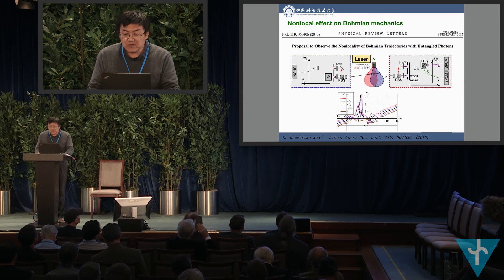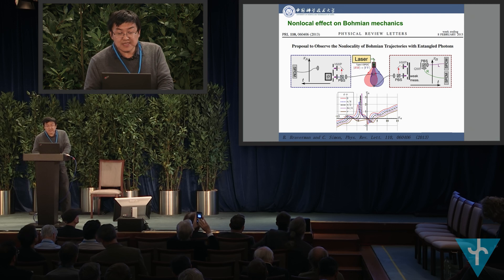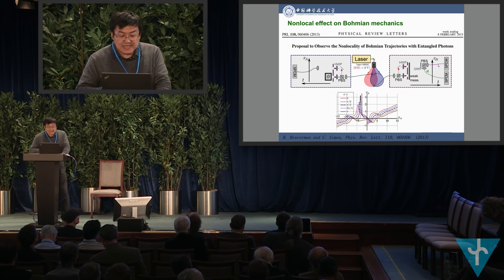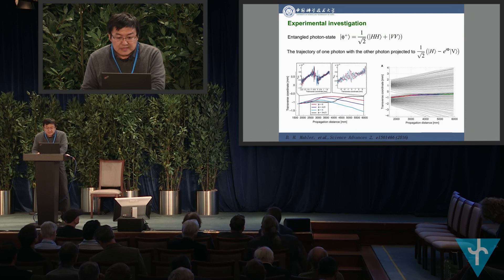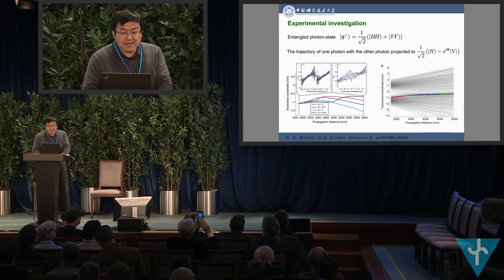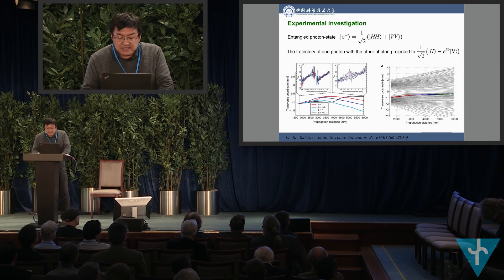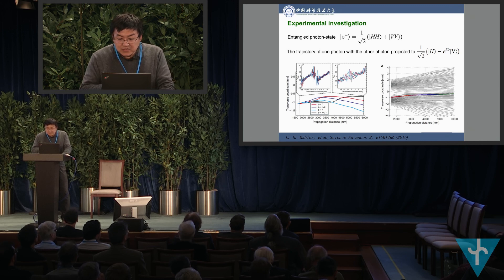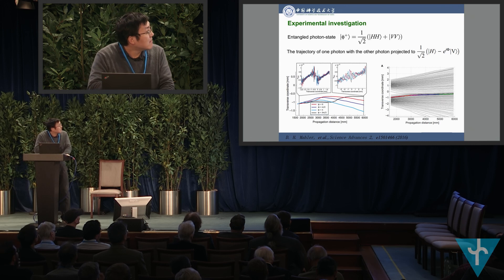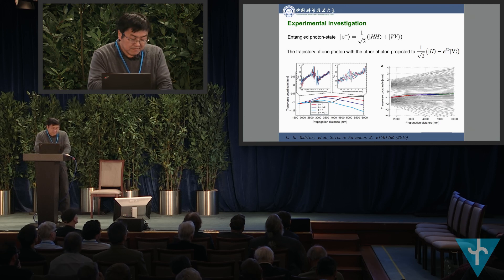The proposal to observe the non-locality of Bohmian trajectories with entangled photons was presented in a seminal paper in 2013 by Riverman and Simon. This proposal was experimentally demonstrated last year by Steinberg's group, using entangled photon pairs, where they obtained the trajectories of one photon with the other photon projected to a specified state.